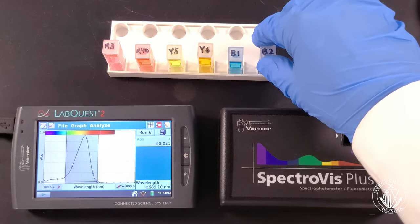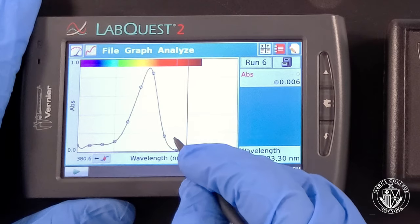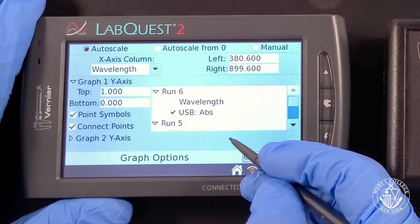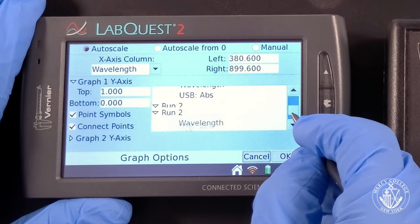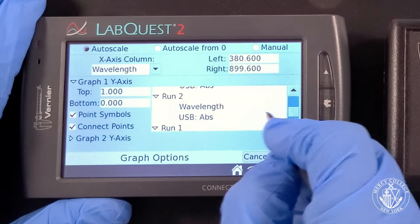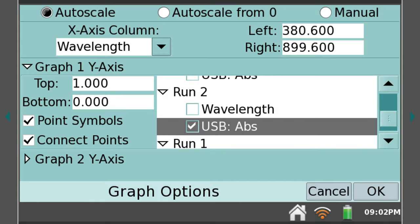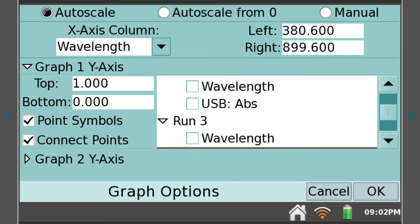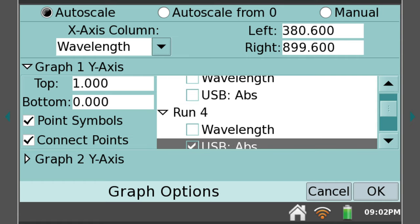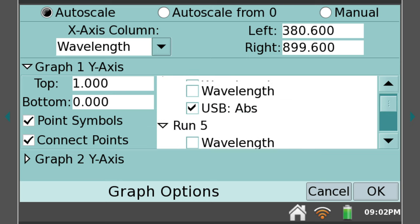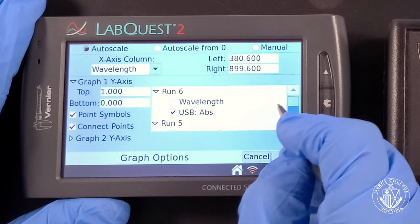To examine all six spectra side-by-side, we select Graph Options from the Graph menu. Then we select each of the absorbance spectra that we wish to display. We'll select runs 1 through 6. We can deselect point symbols to make the graphs clearer.